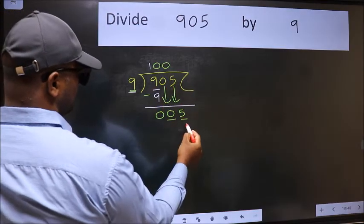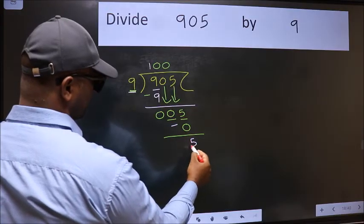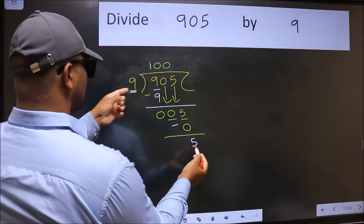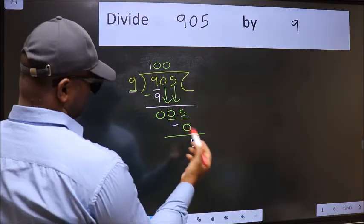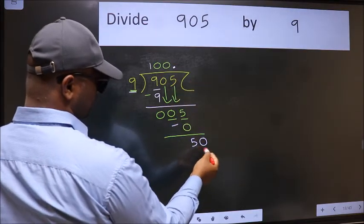Now we should subtract. We get 5, and 5 is smaller than 9. So now we can put dot and take 0. So 50.